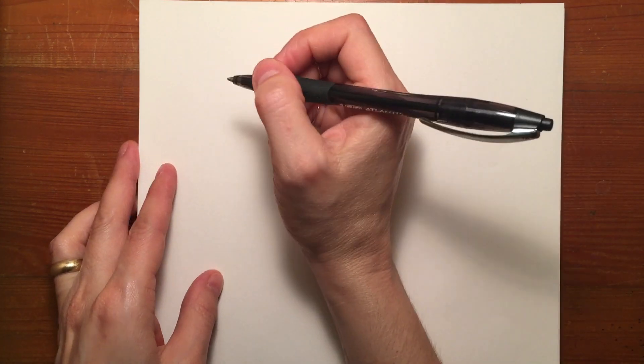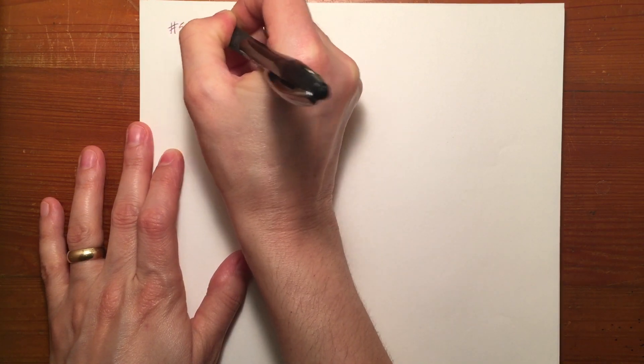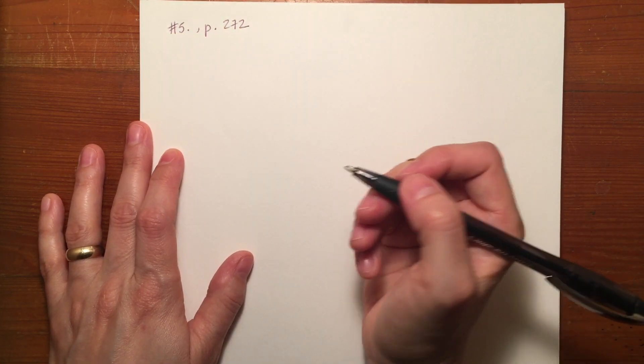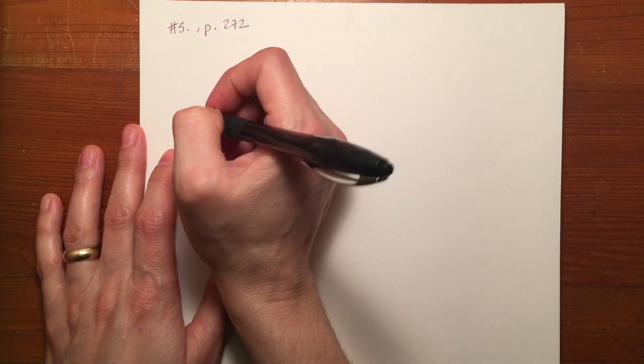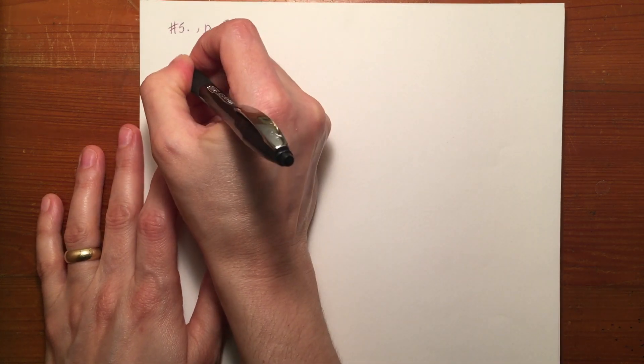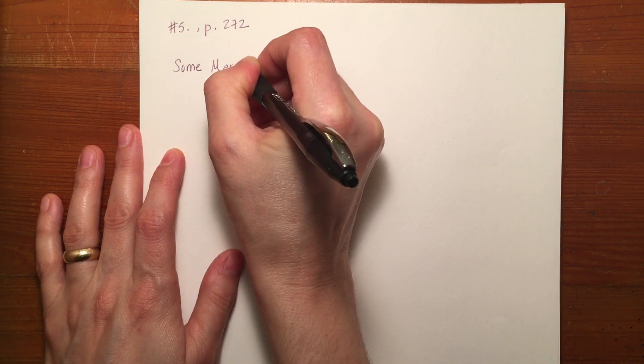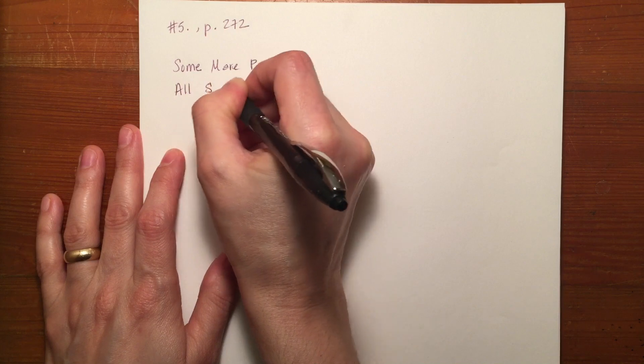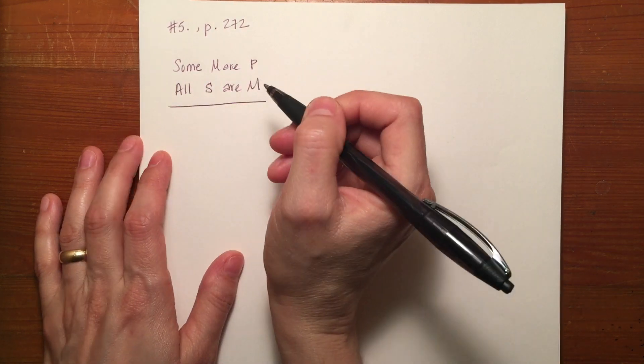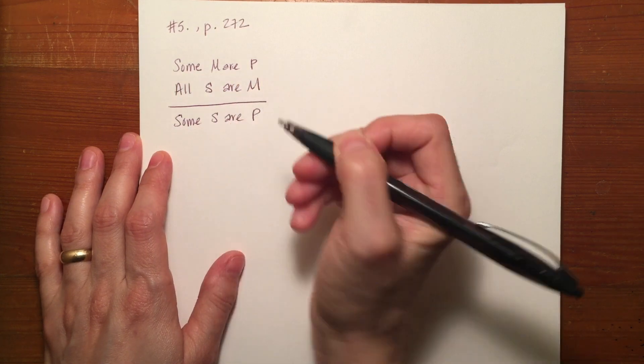Okay, so let's look at the same area of your textbook, number five, page 272. They already give you the symbolized argument so you need not worry about symbolizing it at the moment. They give you Some M are P, All S are M, therefore Some S are P.